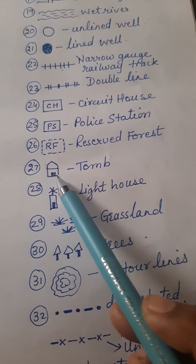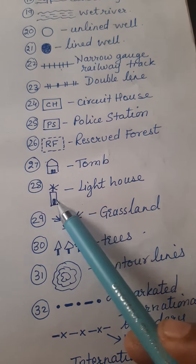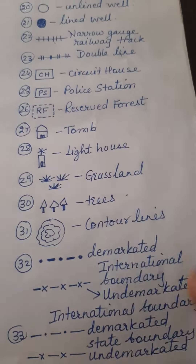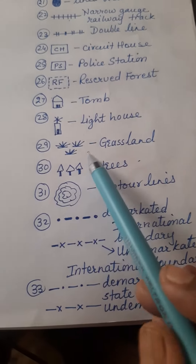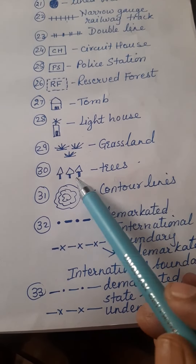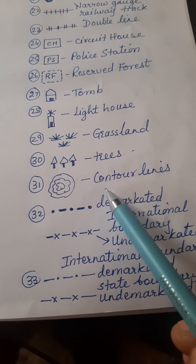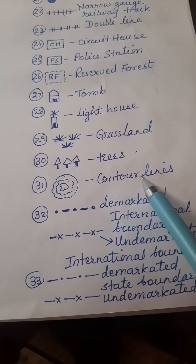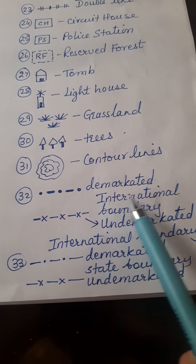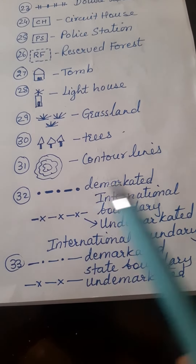This shows there is a tomb. This sign is used to show a lighthouse. This is used to show grassland. This shows trees. This is used to show contour lines. For international boundary, there are two types.